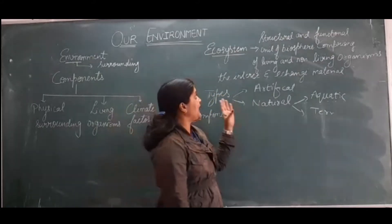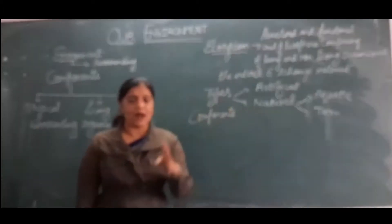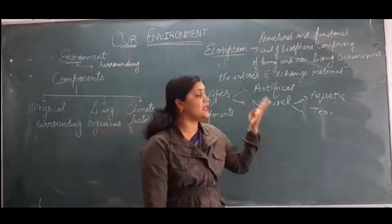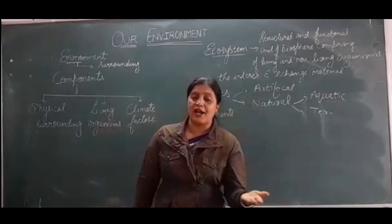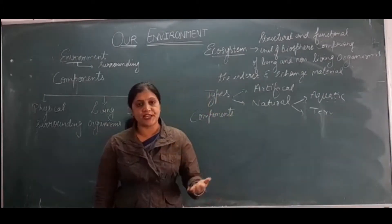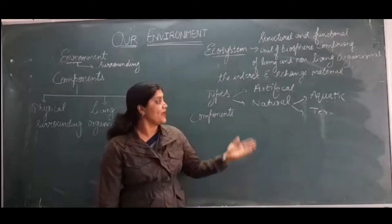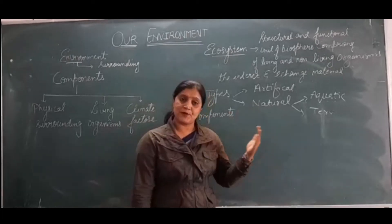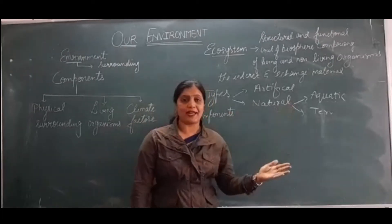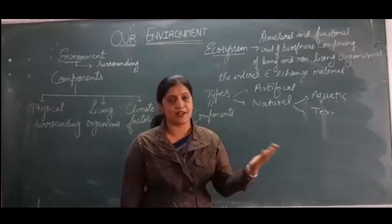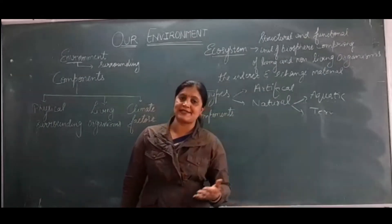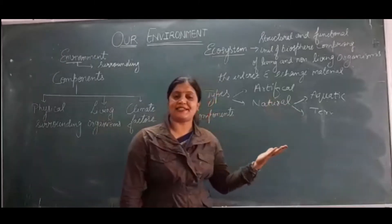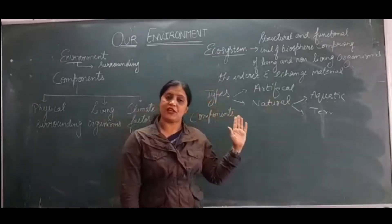So what we have discussed: in ecosystem there are two main types — artificial, where human efforts are required, with examples like garden, crop field, nurseries, and park; and natural ecosystem, further divided into aquatic (ocean, river, ponds) and terrestrial (grassland, deserts). These are the types of ecosystem.